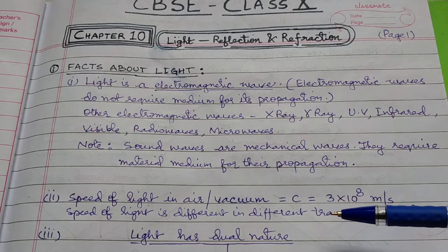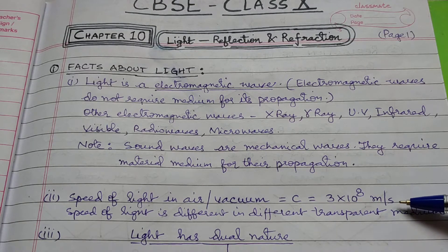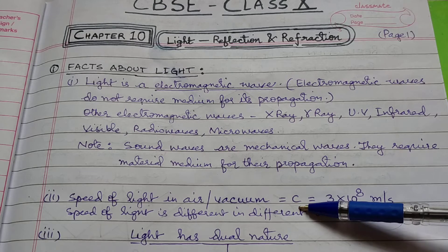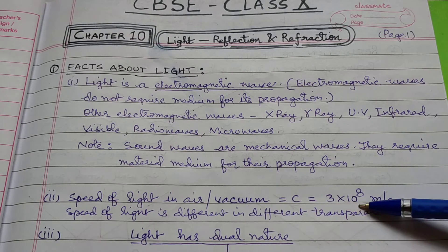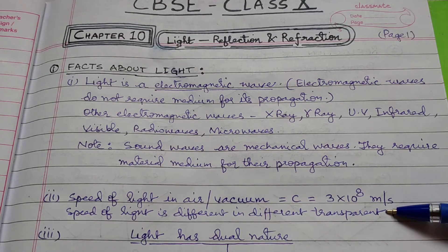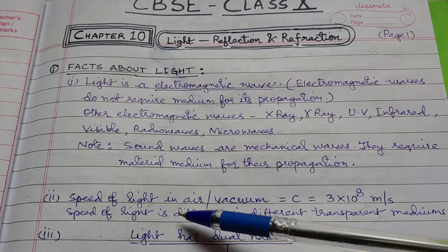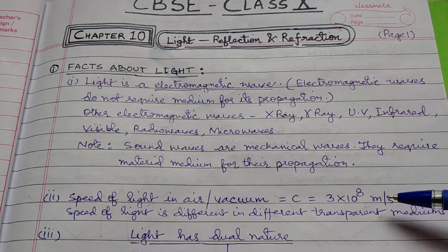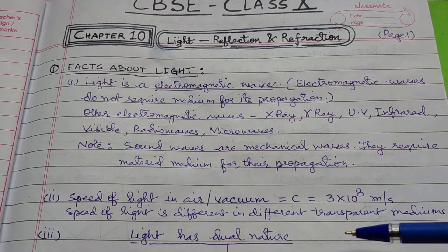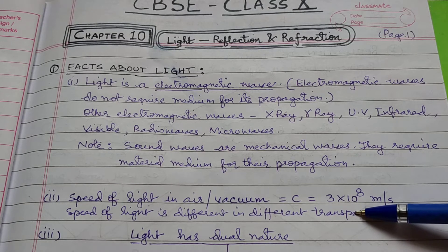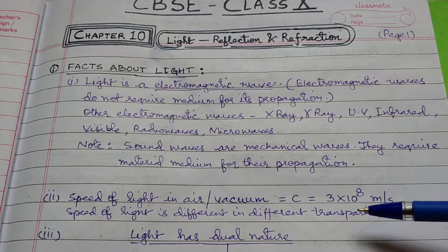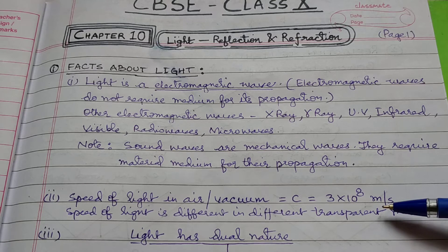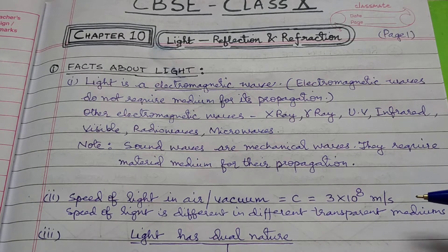The second fact is that light travels in air or vacuum with a speed of 3×10⁸ meters per second, represented by small 'c'. Nothing can have a speed greater than 3×10⁸ m/s. Another important fact is that the speed of light is different for different mediums — 3×10⁸ m/s is for air and vacuum. If light travels in glass, the speed changes to 2×10⁸ m/s. So when light travels from one medium to another, there is definitely a change in speed.